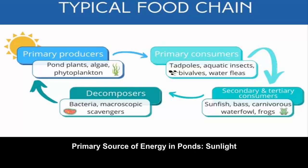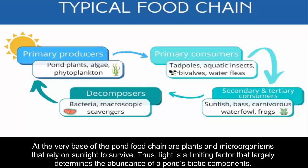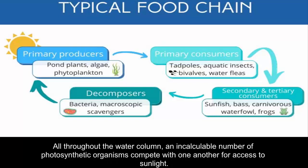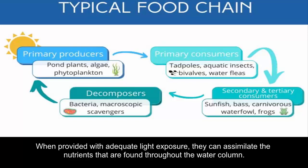The primary source of energy in ponds is sunlight. At the very base of the pond food chain are plants and microorganisms that rely on sunlight to survive. Thus, light is a limiting factor that largely determines the abundance of a pond's biotic components. All throughout the water column, an incalculable number of photosynthetic organisms compete with one another for access to sunlight. When provided with adequate light exposure, they can assimilate the nutrients found throughout the water column.